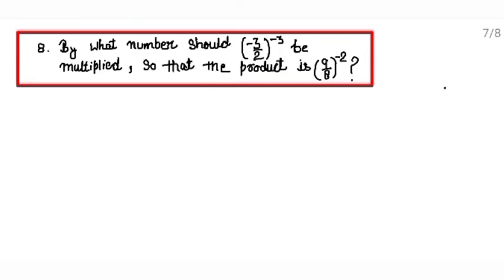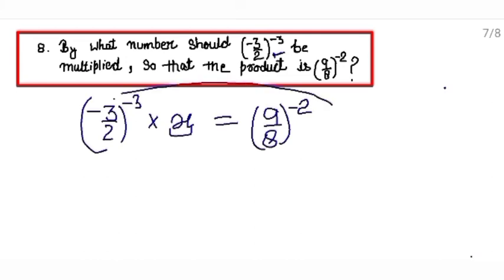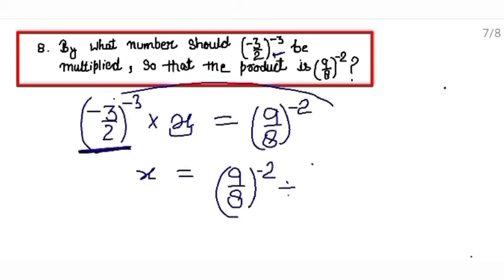Question number 8: by what number should minus 3 upon 2 raised to the power minus 3 be multiplied so that the product is 9 upon 8 raised to the power minus 2? We will let that number be x, and simply find the value of x. For finding the value of x we will move this to the other side. So x equals 9 upon 8 raised to the power minus 2 divided by minus 3 upon 2 raised to the power minus 3.